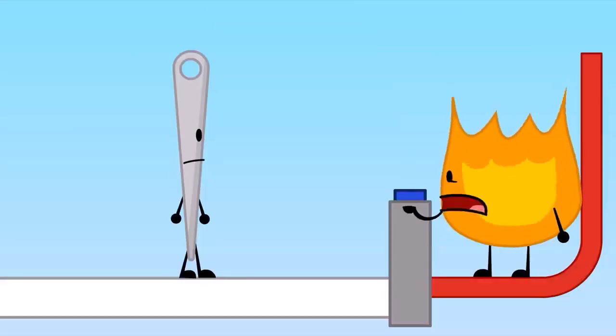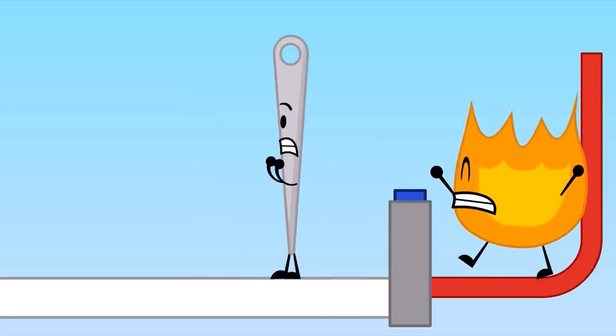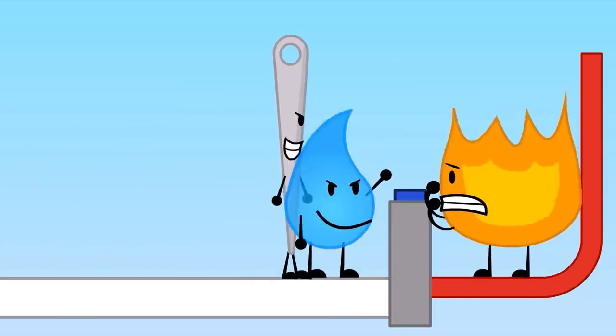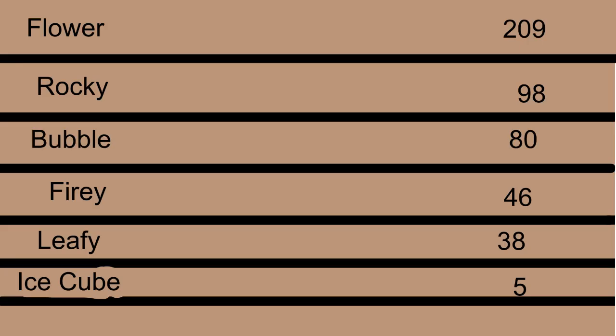Everyone would have voted Spongy due to how stinky he was. Now for the big rejoin. And also we are bringing back the electric board because can't be bothered doing the budget cut thing. Which flower still rejoins with 209 points. And the only reason Ice Cube is still here is because the elimination was rigged.